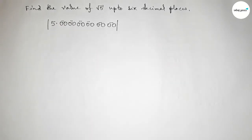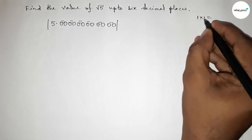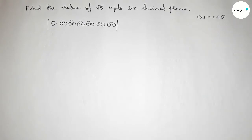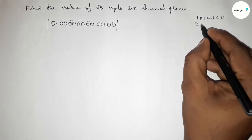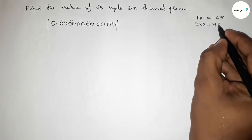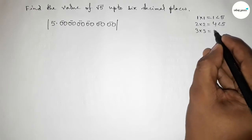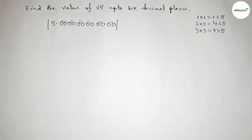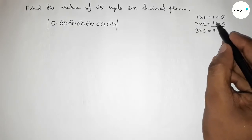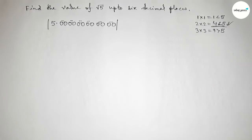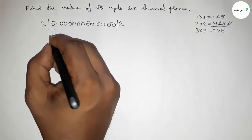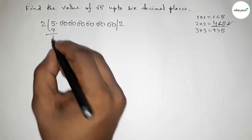Drawing the division line on both sides and taking a number, multiplying by that number which is less than 5. If we take 1, then 1×1=1, which is less than 5. If we take 2, then 2×2=4, which is less than 5. If we take 3, then 3×3=9, which is greater than 5. So we take 2, since 4 is less than and nearest to 5. Writing 2, and 2×2=4; subtracting from 5 gives 1.